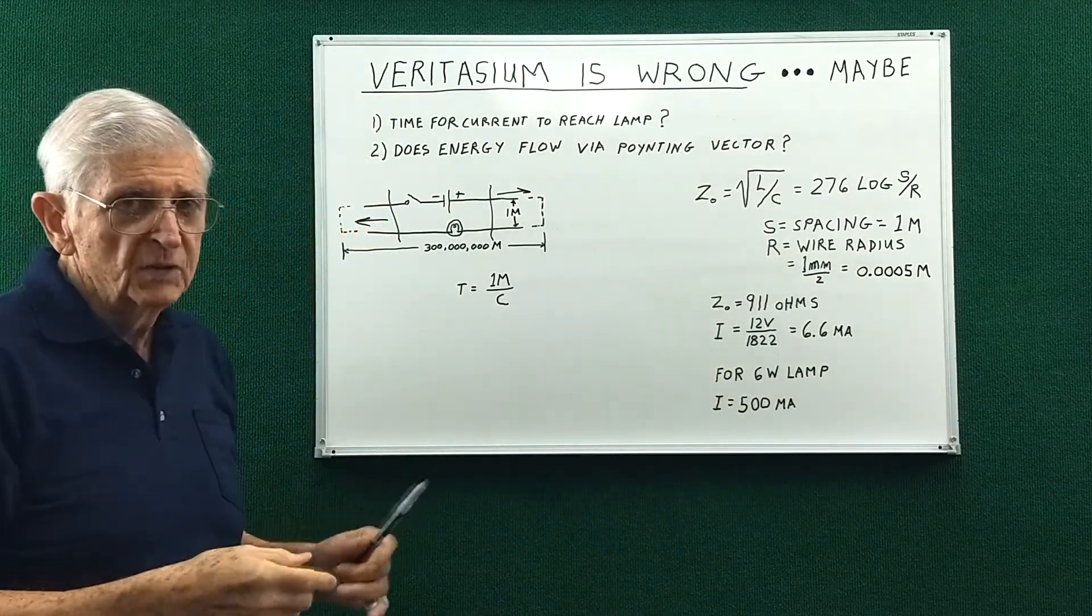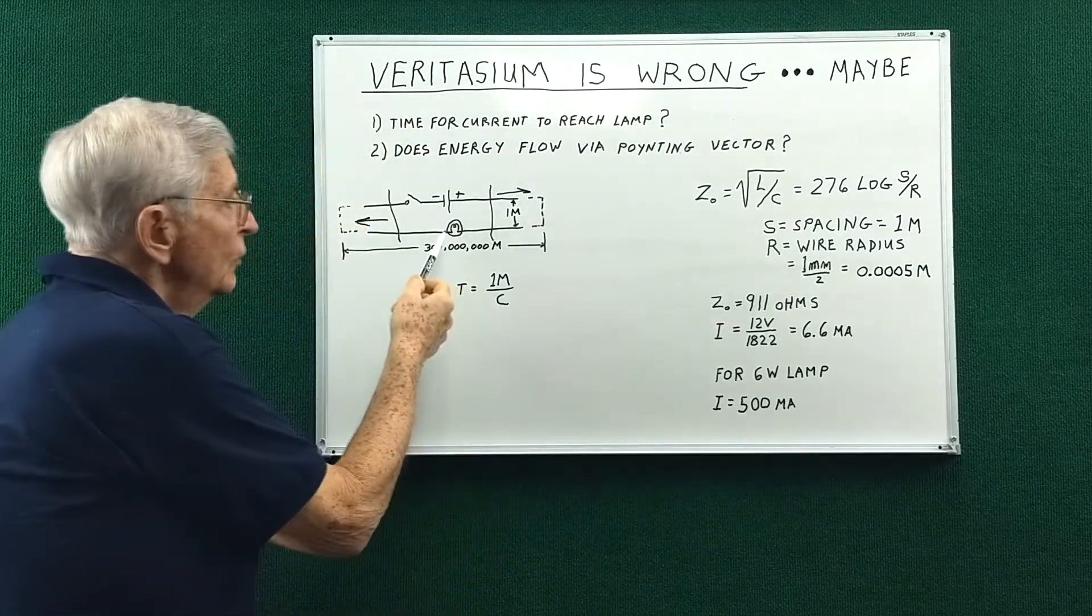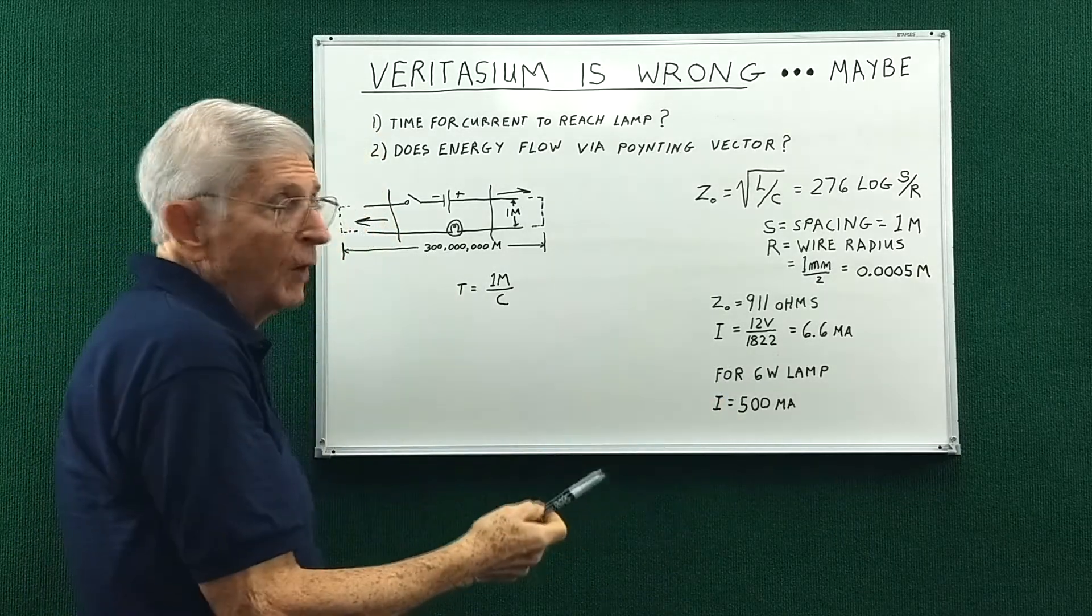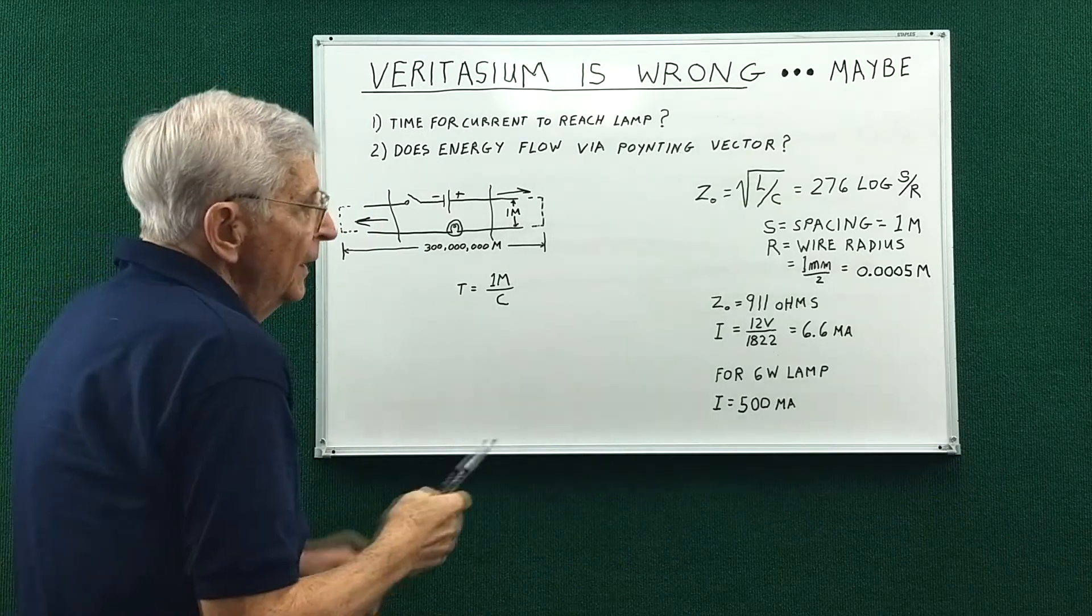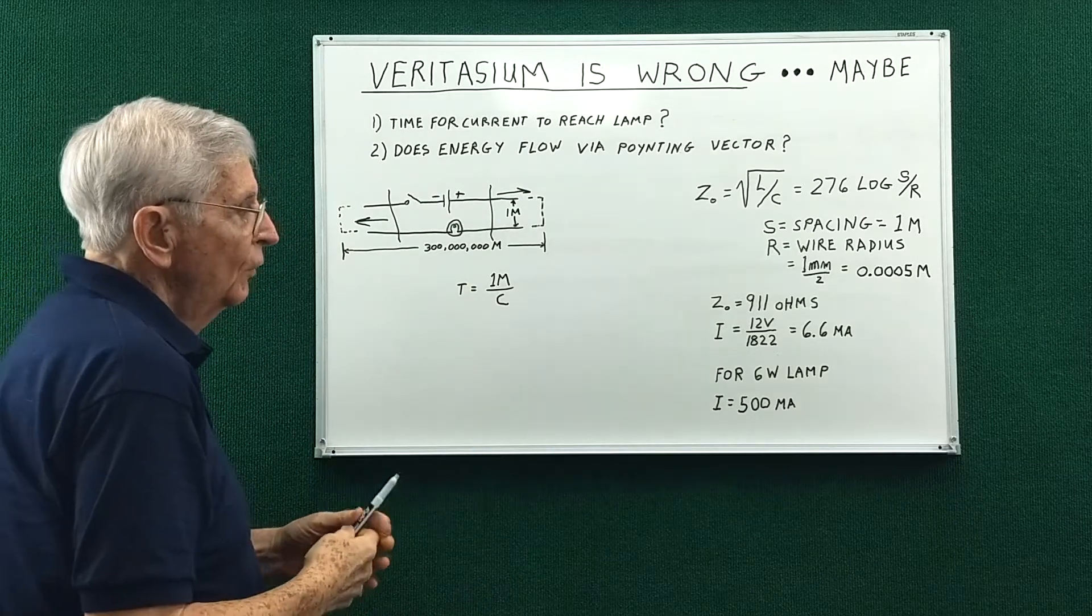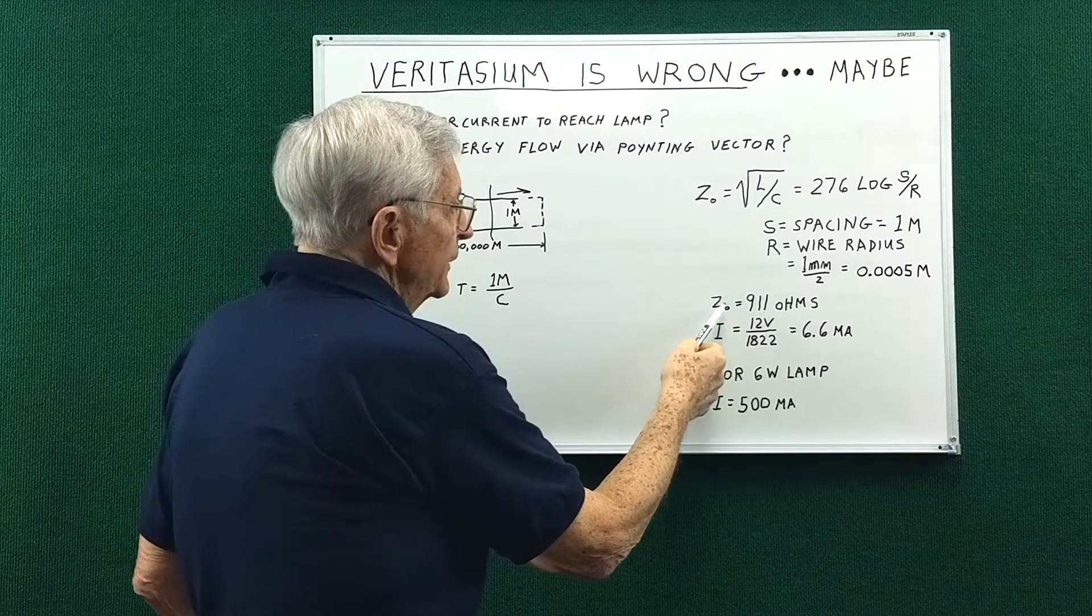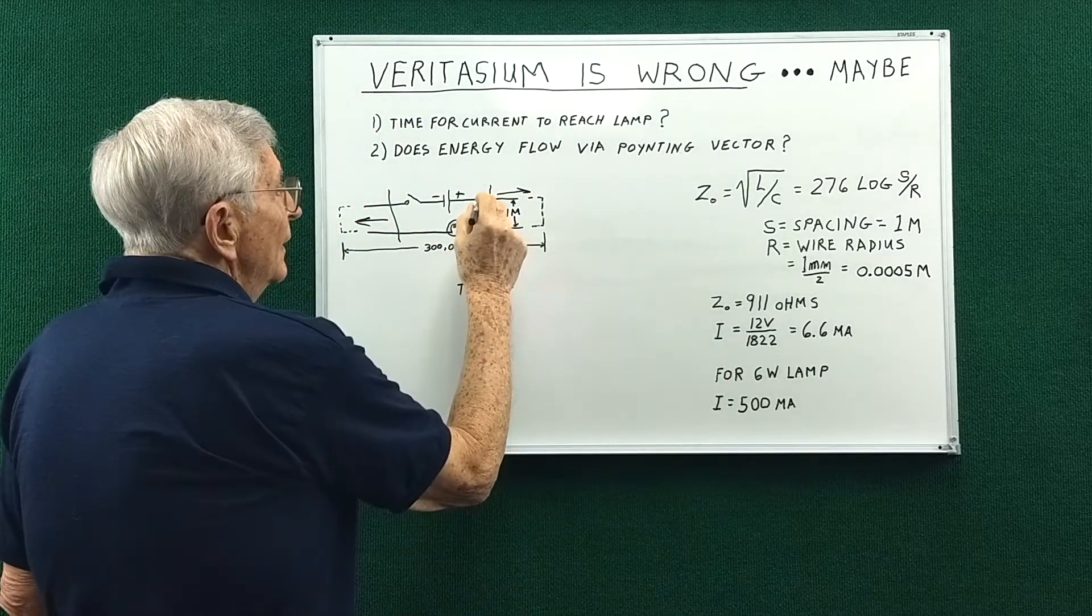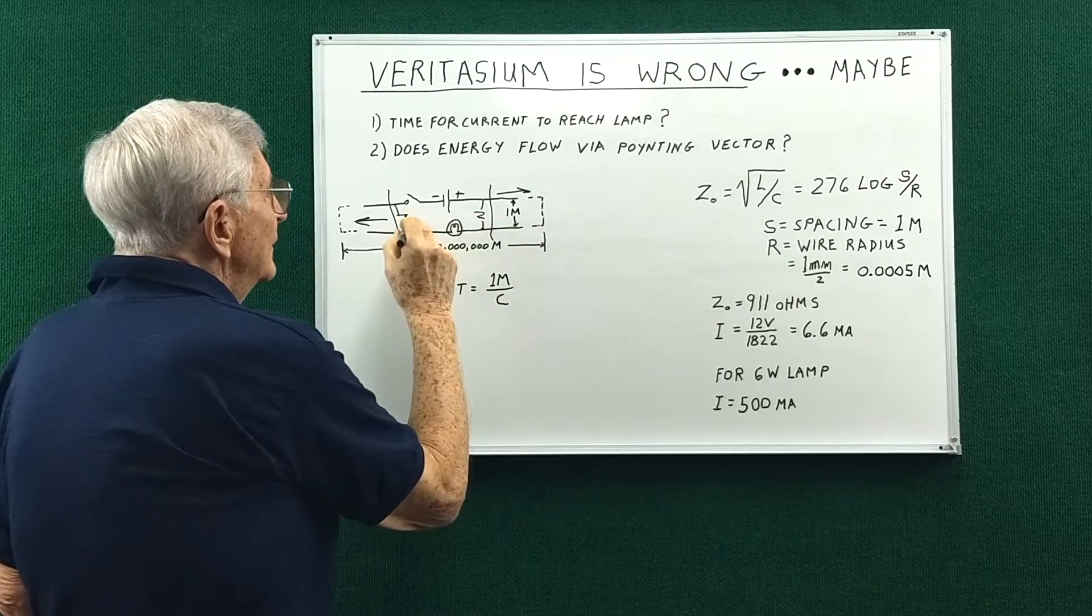So if we drop the numbers into that equation we come up with 911 ohms. Now just for demonstration purposes I'm going to pick an automotive light bulb. The smallest ones are around 6 watts. There's other ones up to 30 watts. And I'm going to pick a 12 volt battery. So if the characteristic impedance is 911 ohms, that's from here to here and here to here.